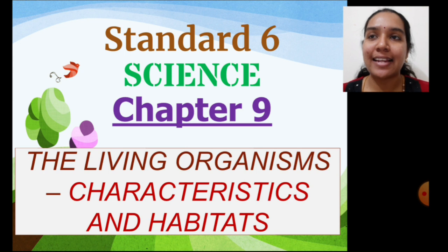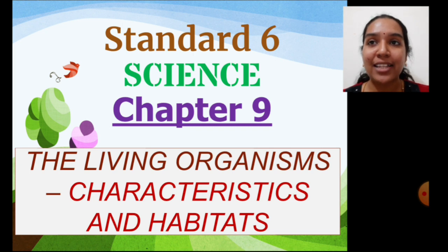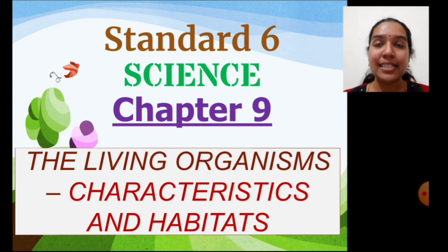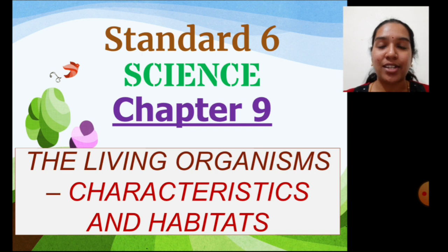Hello students, welcome to your science class. We are learning Chapter 9: The Living Organisms — Characteristics and Habitats from your NCERT science textbook. Today we are going to continue the chapter with some science facts. Do you know female sharks have thicker skins than male sharks? Human beings are made up of 206 bones in an adult body, and you would weigh much less on the moon than on Earth. Science is very interesting, so let's learn more!